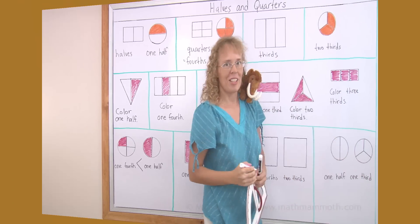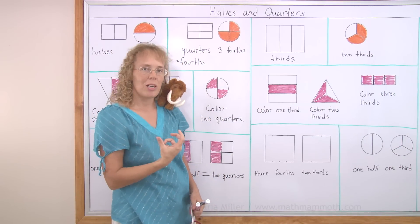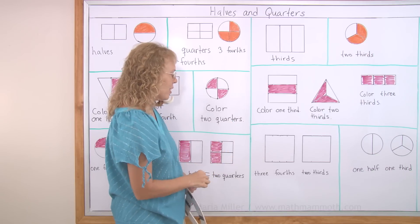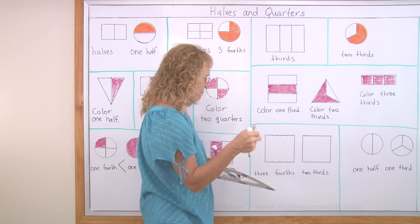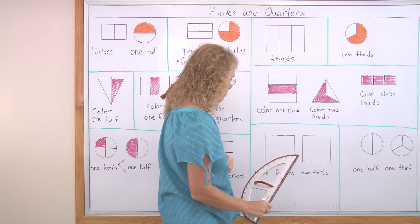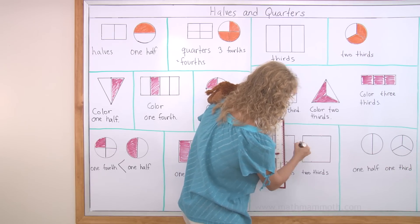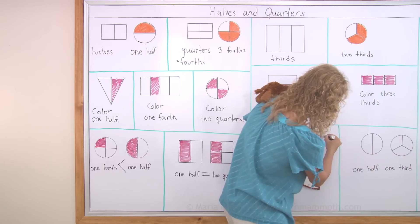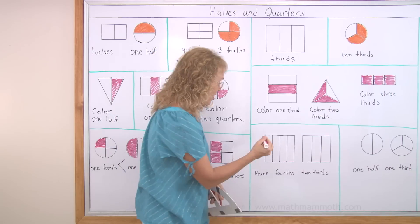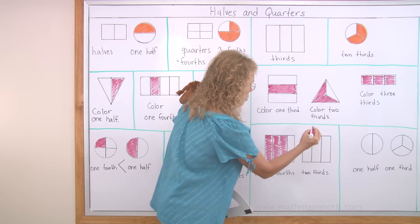Lastly, again we're going to compare and check which amount is more. Which of these is going to be greater? Three fourths or two thirds? Well, first divide it into fourths. And this one is divided into thirds or three equal parts. Then it's time to color again. Three fourths. And two thirds.